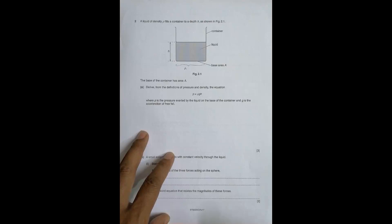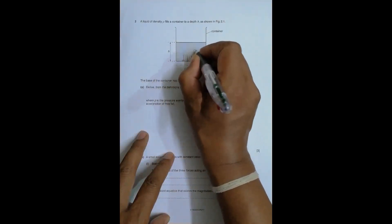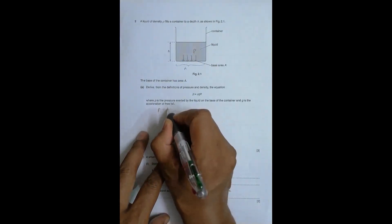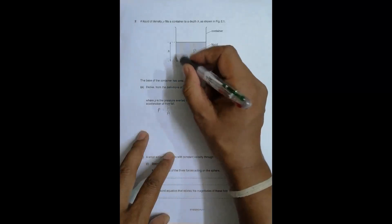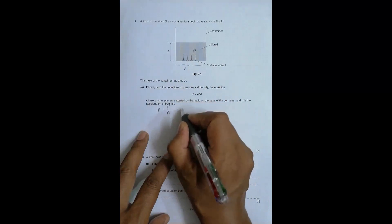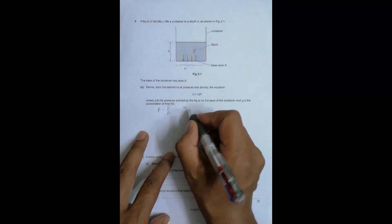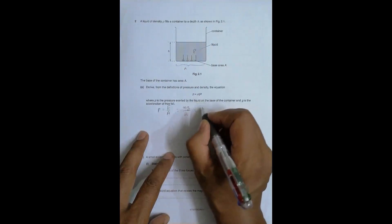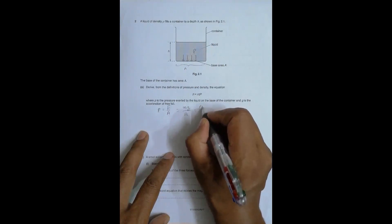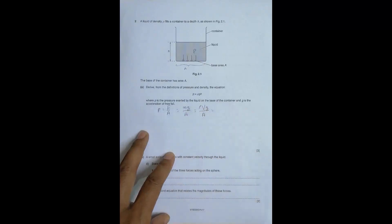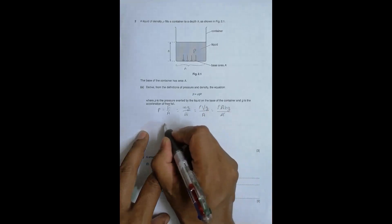We need to derive from the definitions of pressure and density the equation P = ρgh, where P is the pressure exerted by the liquid on the base, and g is the acceleration of free fall. Pressure P equals force per unit area — force on the base divided by area. Force equals mass times g, and mass equals density times volume, so that's ρ times A times H. Dividing by A, the A's cancel, giving P = ρgH.